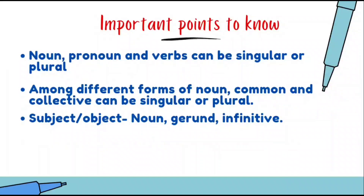Important points to know: First, noun, pronoun, and verbs can be singular or plural. Out of the eight parts of speech, only noun, pronoun, and verb can be singular or plural. Second, among different forms of noun, only common and collective nouns can be singular or plural — unlike proper, material, and abstract nouns.